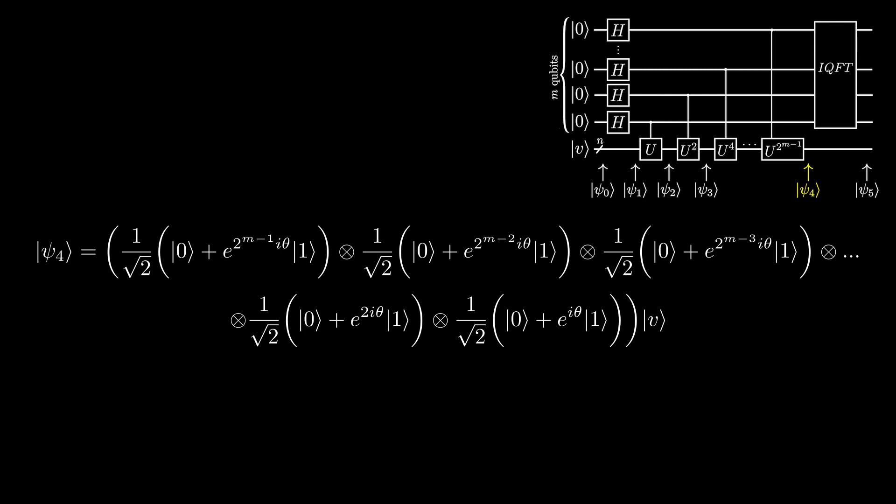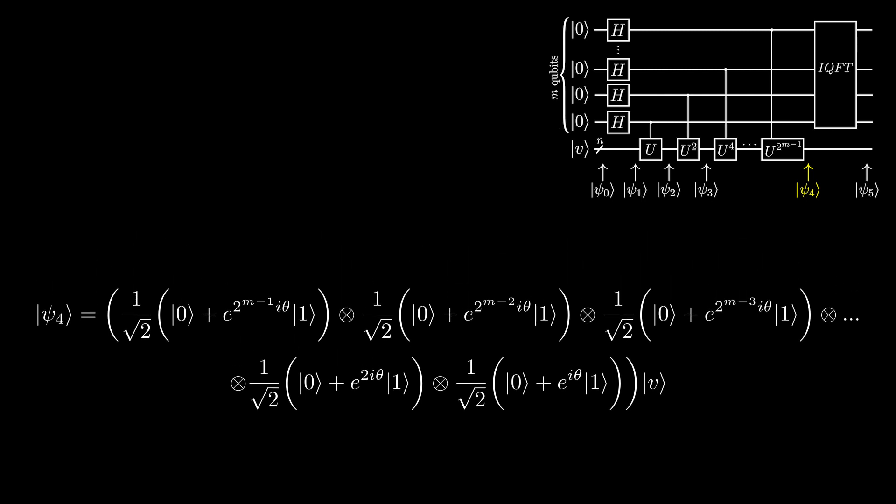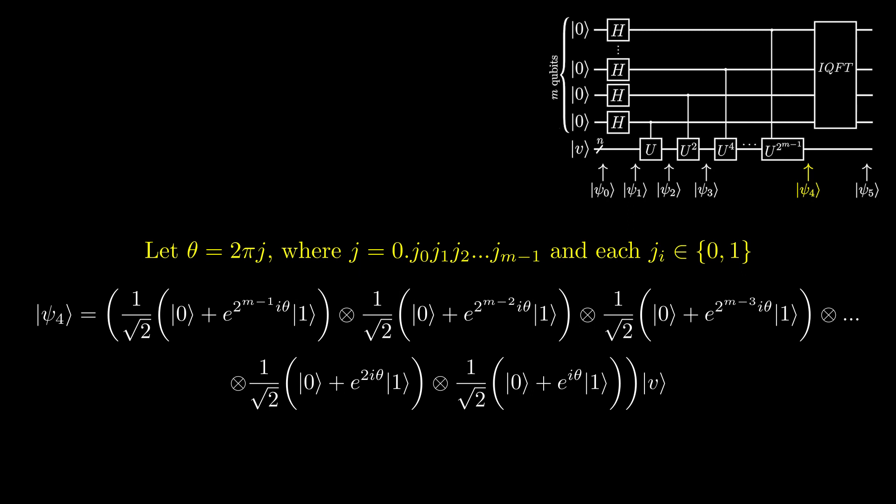Now, we let θ = 2πj, where j is a number between 0 and 1, since θ is an angle between 0 and 2π. With this, if we find j, we can find θ.